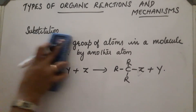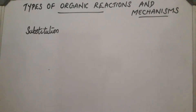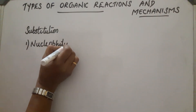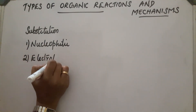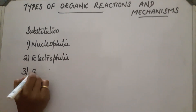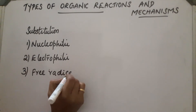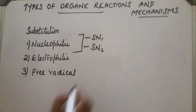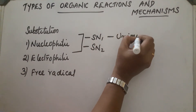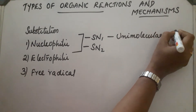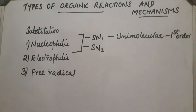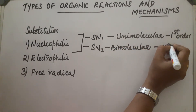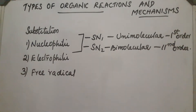Substitution reactions are again divided into three types: first is nucleophilic substitution reaction, second is electrophilic substitution reaction, and third is free radical substitution reaction. Nucleophilic substitution is further divided into two: SN1, which is unimolecular nucleophilic substitution and a first-order reaction, and SN2, which is bimolecular substitution and a second-order reaction.